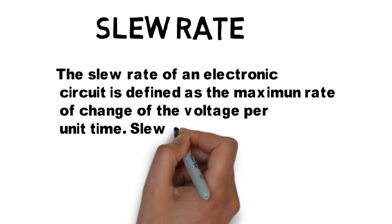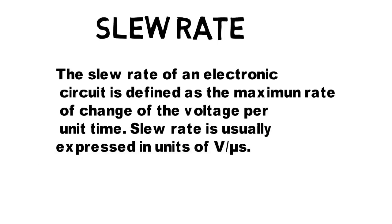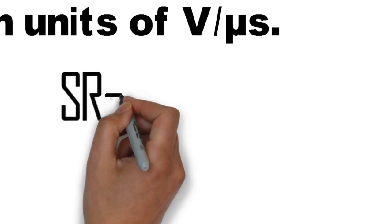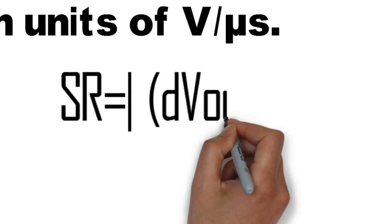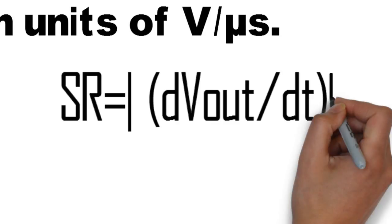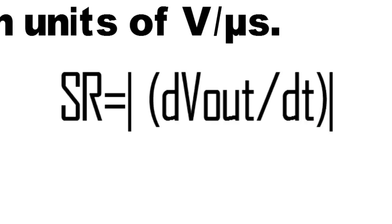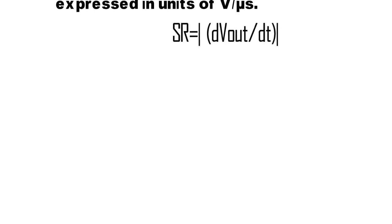Slew rate is usually expressed in units of volts per microsecond. Slew rate equals the maximum modulus of dVout/dt, the derivative of output voltage with respect to time.